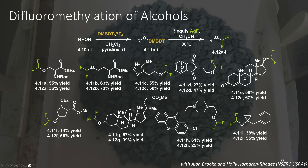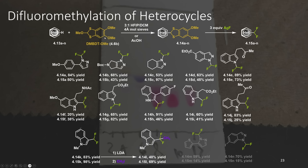Now that we had a decent amount of this reagent in hand, we were able to functionalize a number of alcohols to prepare difluoromethyl ethers. This worked again on a wide range of functional groups and worked for both primary, secondary, as well as tertiary alcohols. In addition to this, we explored the chemistry of the DMBDT methyl ether compound. This was able to functionalize a number of different nitrogen-containing heterocycles, and it was also able to functionalize indoles in the two position or at the nitrogen, depending on the conditions used. One downside was that the difluoromethyl compounds generated weren't always super stable, which is one weakness of this methodology.